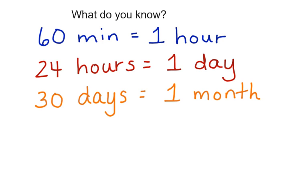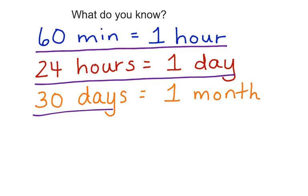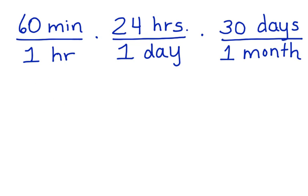Now that we've written down what we know, we are going to take each of these equivalents and write them in fraction form. Here is what that looks like. Notice that this is written as a multiplication problem, and when we use dimensional analysis, that is what we're going to do. We're going to look at canceling out the units that are in common. We have hours here and hours here that can cancel. We have days here and days here that we can cancel.